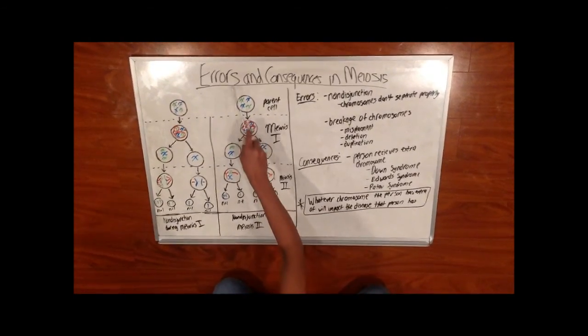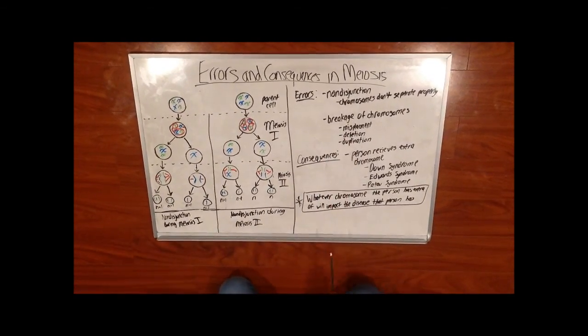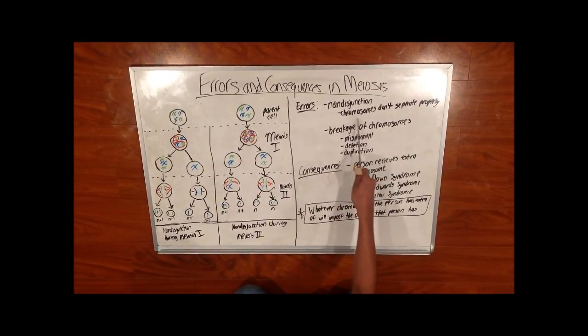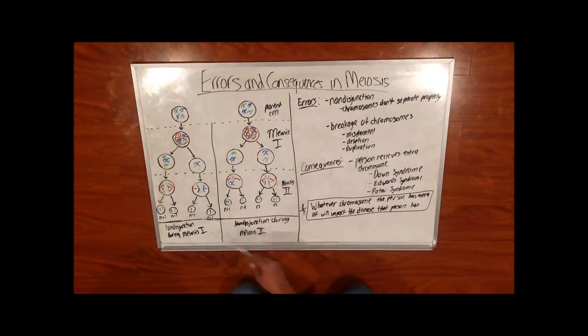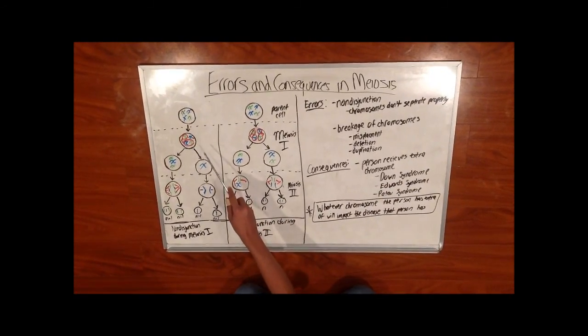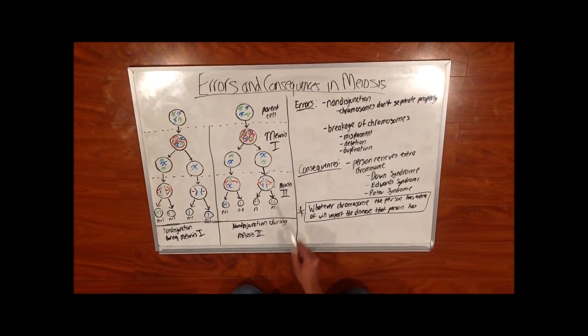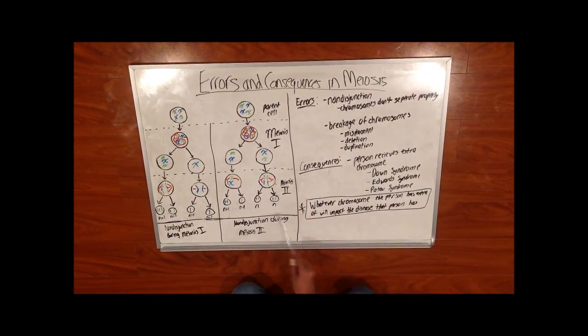Now here are some errors and consequences in meiosis. Some errors include non-disjunctions and the breakage of chromosomes. Non-disjunctions are when chromosomes don't separate properly, like in this picture. There are some non-disjunctions during meiosis 1 and here's the outcome. And here is the non-disjunction during meiosis 2 and here are the outcomes.